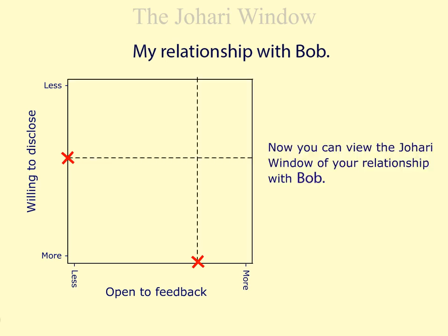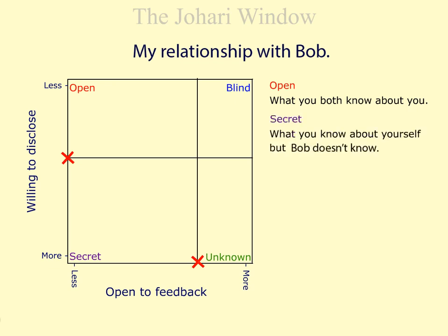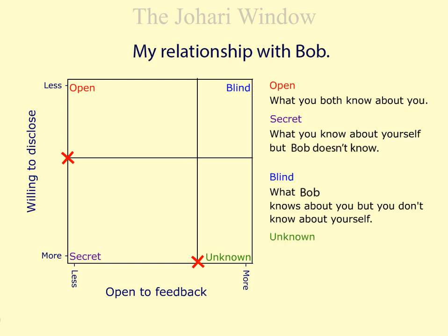Now you can view the Johari Window of your relationship with Bob. Open: what you both know about you. Secret: what you know about yourself, but Bob doesn't know. Blind: what Bob knows about you, but you don't know about yourself. Unknown: what neither you nor your partner knows about you.